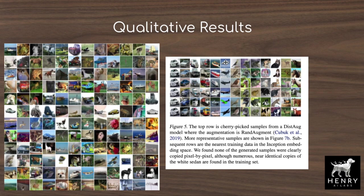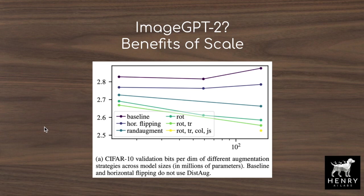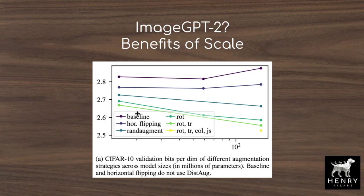This table hints at a potential ImageGPT-2, showing that as you increase the number of parameters and the strength of the data augmentation — including rotation, translation, colorization, and jigsaw augmentation — more data augmentation combined with more model parameters leads to better performance on the bits-per-dimension metric, where lower is better. Interestingly, the baseline model without any augmentation actually gets worse as you increase the number of parameters on CIFAR-10, possibly overfitting to the 32x32 images.